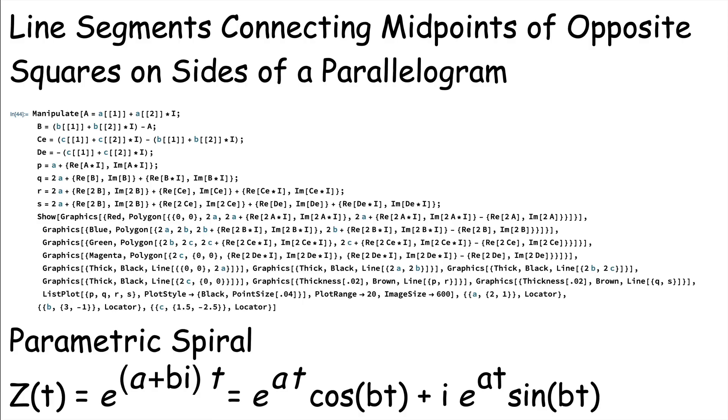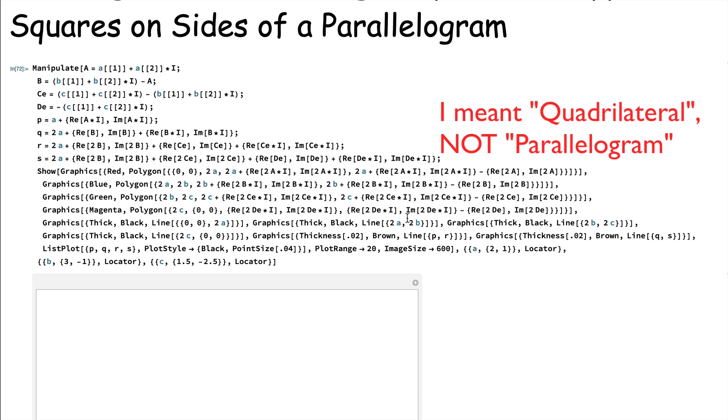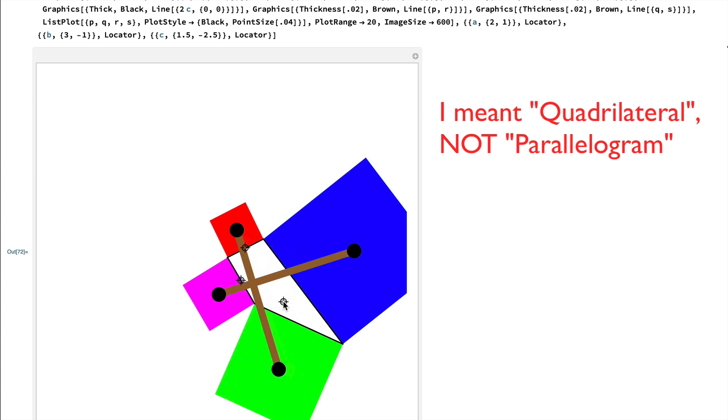A couple more bits of code to show you. This first bit shows that line segments connecting midpoints of opposite squares on sides of a parallelogram are perpendicular and of the same length, and it doesn't matter what parallelogram you're dealing with. You also could even have a non-convex parallelogram, and it still works.